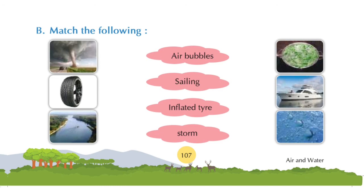Now let's proceed to exercise B, match the following. Children, from the given words, that is air bubbles, sailing, inflated tire, storm, we have to match the word with correct pictures.